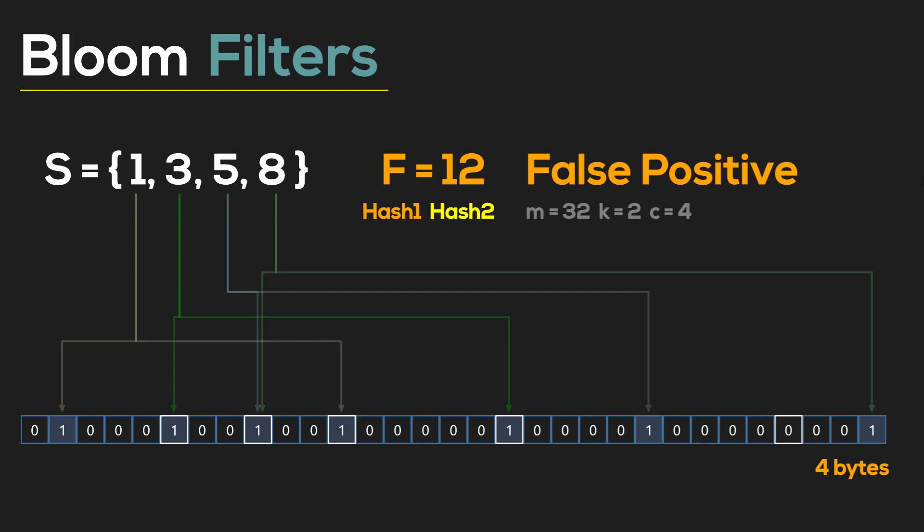Capacity is the expected number of items that we plan to store in our bloom filter. Having all of the variables defined we can compute the false positive error rate. And for the expected capacity of 4 it's 5%. If we double the capacity to 8 the error goes up to 15%. If we continue to increase the capacity the error will go up as well. But what happens if we add more hash functions? Can you guess?